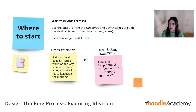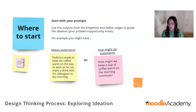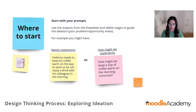Some projects might come out of the empathize and define stages with maybe 20 problem opportunities or areas, and we can't take all of those into ideation. Before bringing things into ideation, you probably want to have a discussion with your team or relevant stakeholders about what are the most important problem spaces or opportunity areas to focus on. If you joined the previous webinar you'd be familiar with something called need statements, which are very similar to how might we statements.